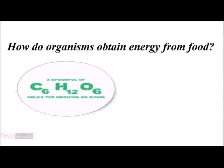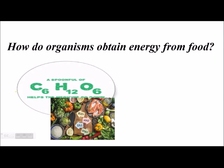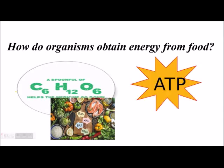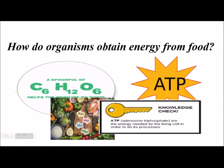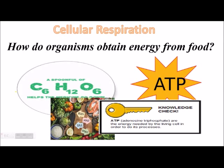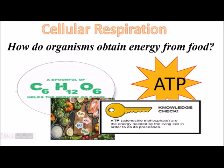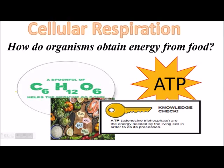Energy from glucose, or simply food, is extracted via the removal of electrons from the molecule to produce ATP, or adenosine triphosphate. ATP is the energy built up through a process called cellular respiration. It is important to note that both plants and animals participate in cellular respiration and therefore both have mitochondria — the organelle where ATP production occurs.